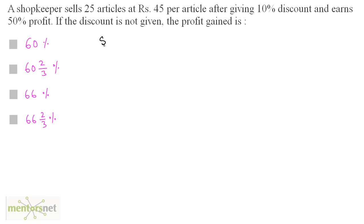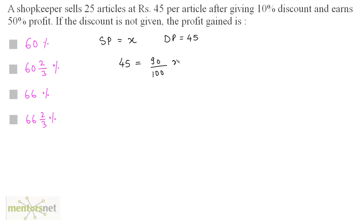Let us assume the selling price of each article is x rupees. The discounted price is Rs. 45 per article and the discount percentage is 10%. By definition, the discounted price is a percentage reduction of the selling price. So 45 equals 10% less of the selling price — that is, 90% of x, which is 90 upon 100 times x. Therefore x equals 45 times 10 by 9, so x equals Rs. 50.